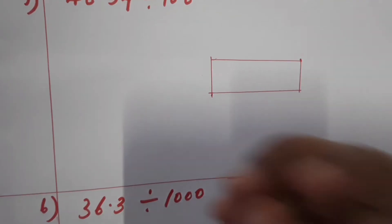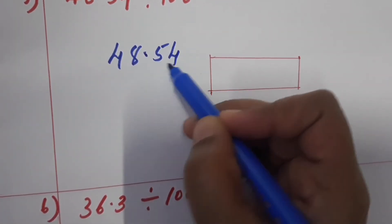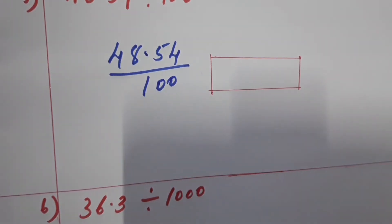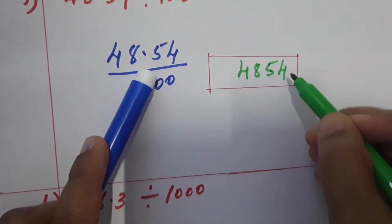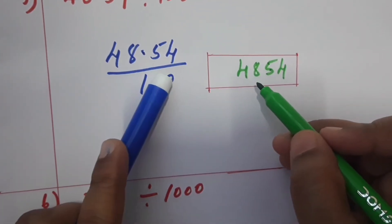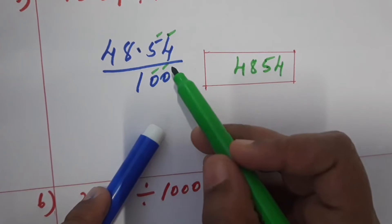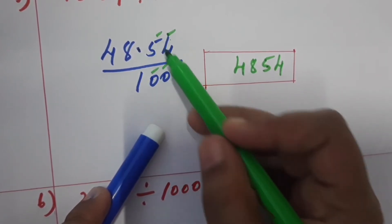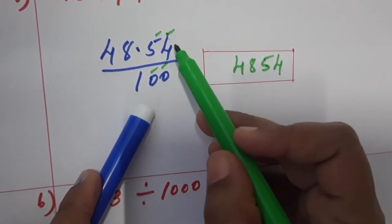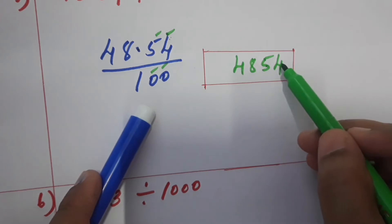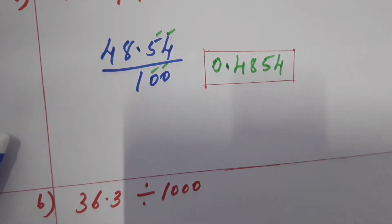Now the fifth question: 48.54 divided by 100. Write the numerator without the decimal point as 4854. After the decimal point there are two digits, and the denominator has two zeros — total four digits. Count one, two, three, four from the right, place the decimal point and add a leading zero. The answer is 0.4854.